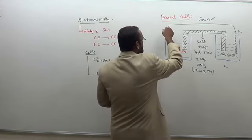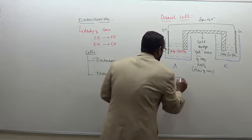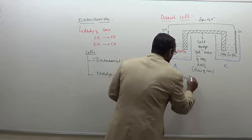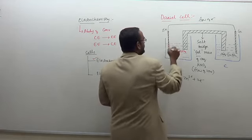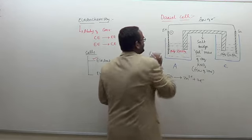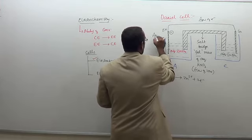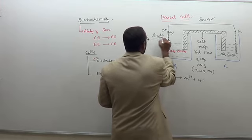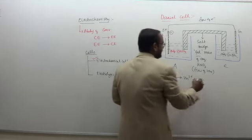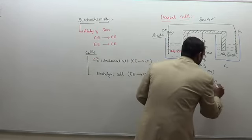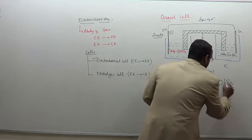When we dip zinc in zinc sulphate, zinc dissolves to form Zn²⁺ and 2 electrons, and those electrons accumulate in the zinc rod. Therefore this electrode is called the negative electrode. In an electrochemical cell, the negative electrode is called the anode. At the anode, loss of electrons takes place — and loss of electrons is called oxidation. So at the anode, oxidation takes place.